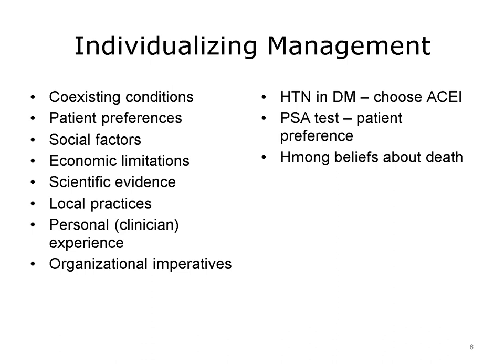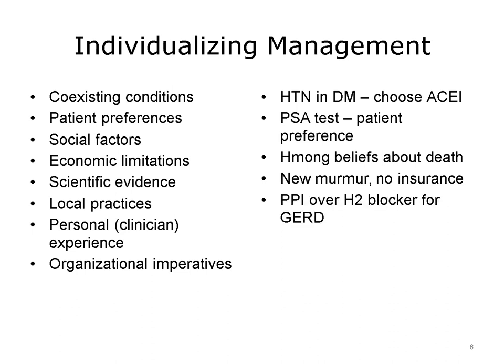Economic limitations come into play, for example, when a new heart murmur is discovered but the patient has no insurance to pay for diagnostic testing. Here, a wait-and-watch approach might be taken. For a patient with peptic ulcer disease and heartburn, scientific evidence would drive the decision to choose a class of drug called a proton pump inhibitor instead of another class called a histamine blocker. However, the better agent is more expensive and price may be a concern.